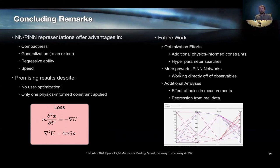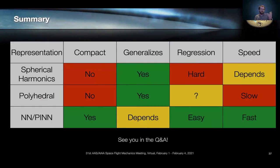So that gets into the future work of trying these additional optimization efforts, adding additional physics-informed constraints, and then doing more characterization about performance. But with that, I'm going to leave you with a chart that kind of highlights the advantages and disadvantages of the different representations. And I hope to see you in the Q&A. Thank you.